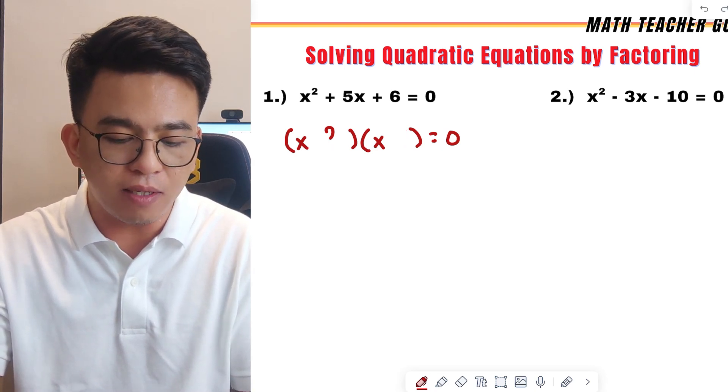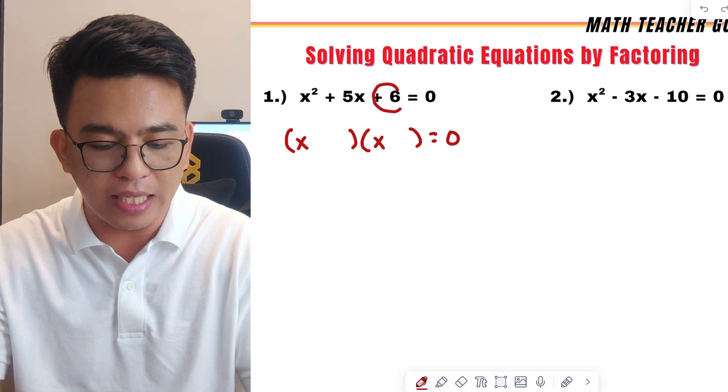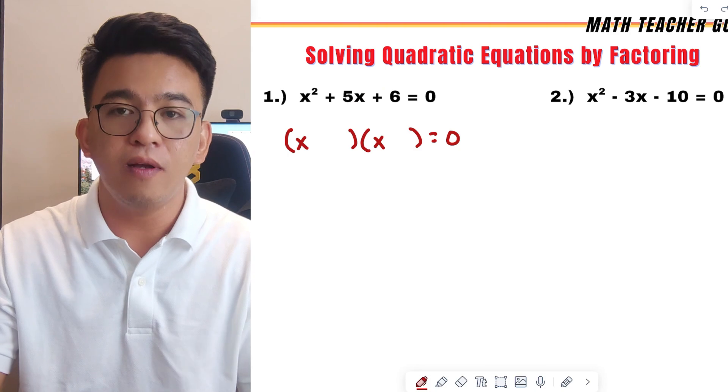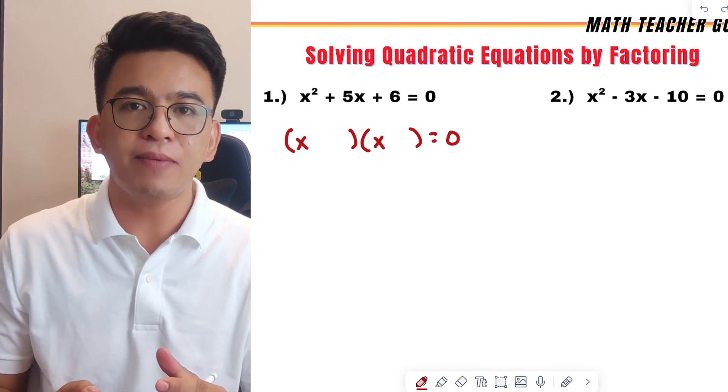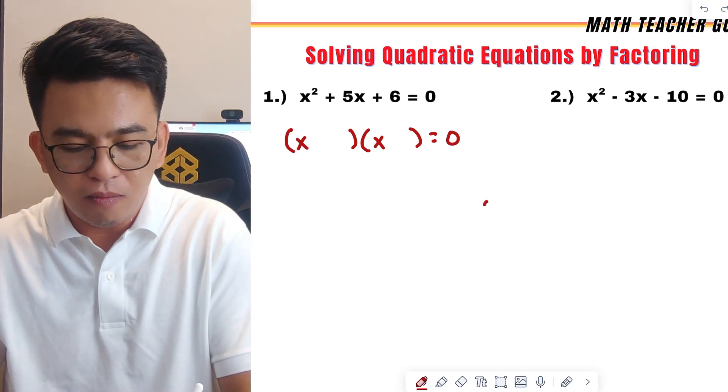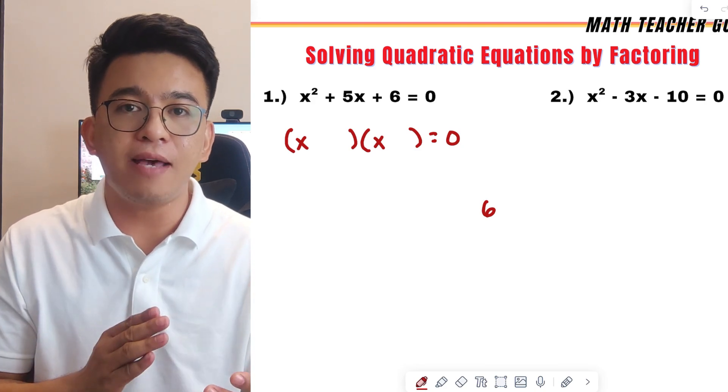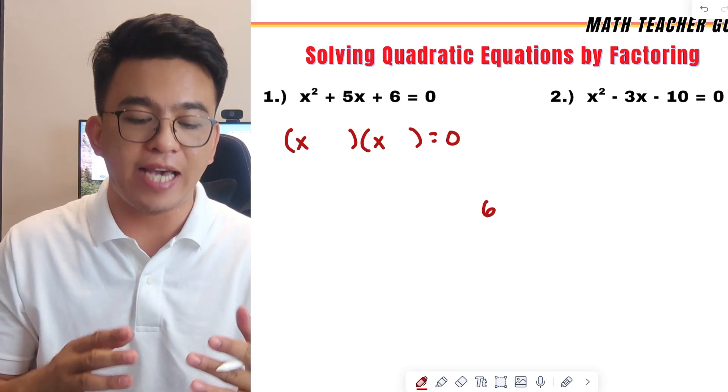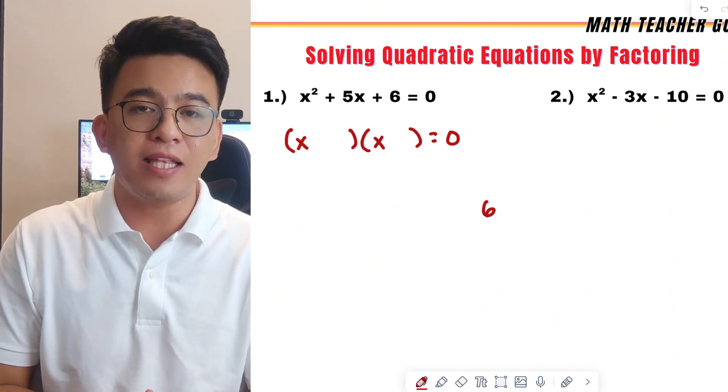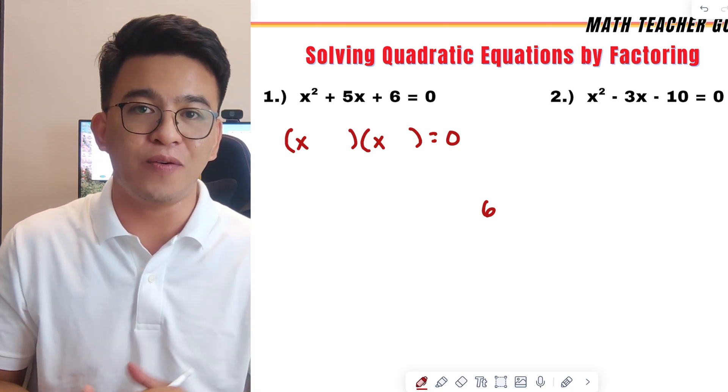To find those numbers, we need to consider the constant, which is the 6 and our b, which is the 5. What's the principle? We think of two numbers that will multiply and the answer is 6, but when we add them, the correct answer is 5. Again, here's the principle: two numbers that when we multiply, the correct answer or the product is 6 and the sum is equal to 5.